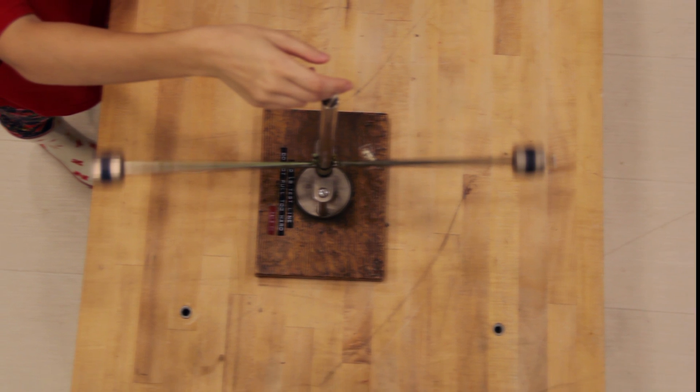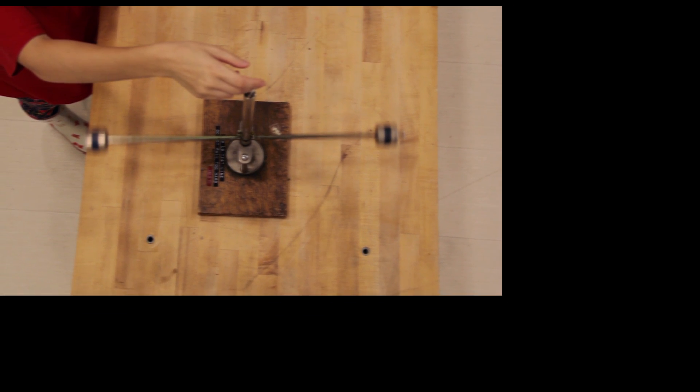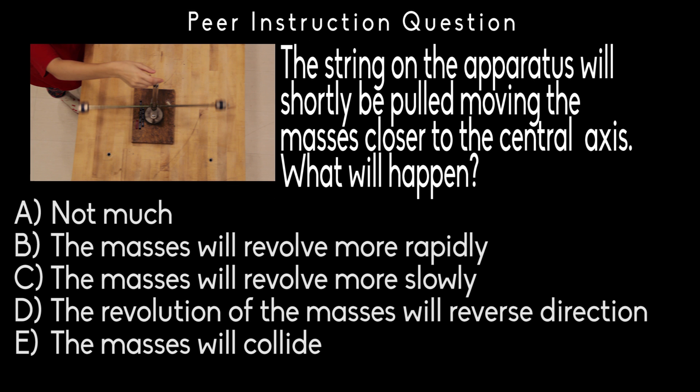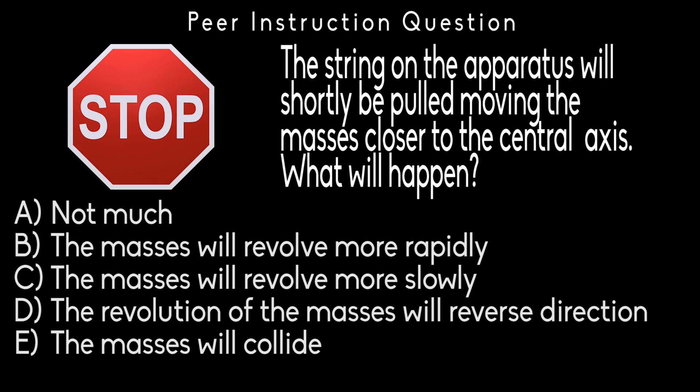Let's first explore our understanding of angular momentum with a peer instruction question. The string on the apparatus will shortly be pulled, moving the masses closer to the central axis. What will happen? Please record your vote on a piece of paper and explain why you chose your answer. Your instructor will now stop the video.